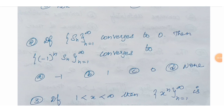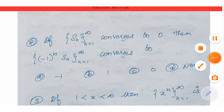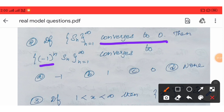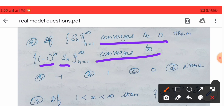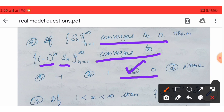Next question: if sn, n = 1 to infinity converges to 0, then (-1)^n · sn, n = 1 to infinity also converges to 0. Option C is the correct answer.